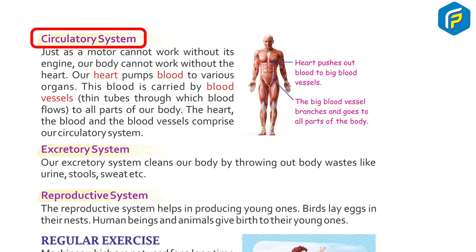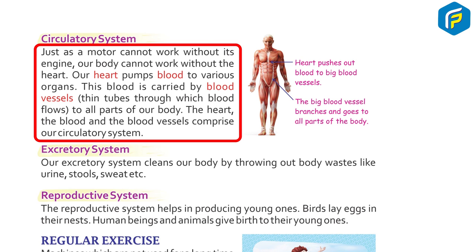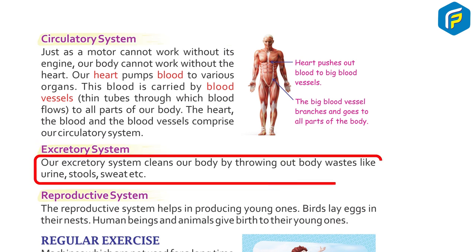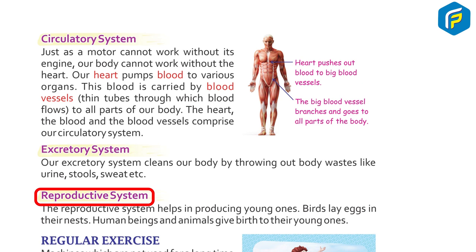Just as a motor cannot work without its engine, our body cannot work without the heart. The heart pumps blood to various organs. Blood is carried by blood vessels — thin tubes through which blood flows to all parts of the body. The heart, blood, and blood vessels comprise our circulatory system. The excretory system cleans our body by throwing out waste like urine, stools, and sweat.